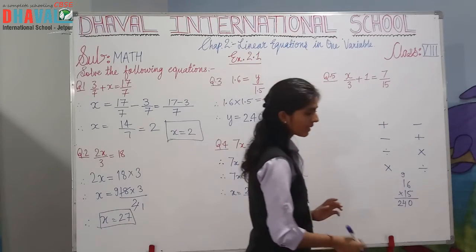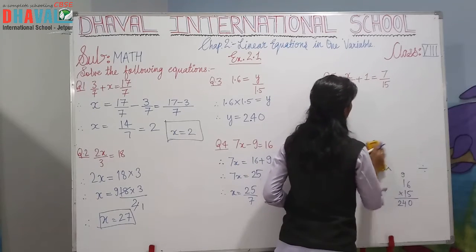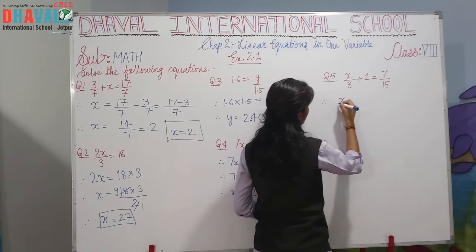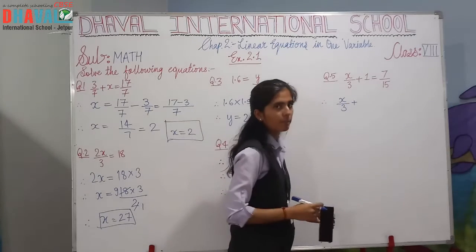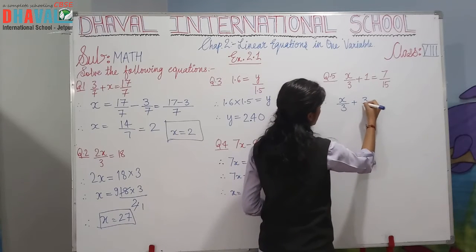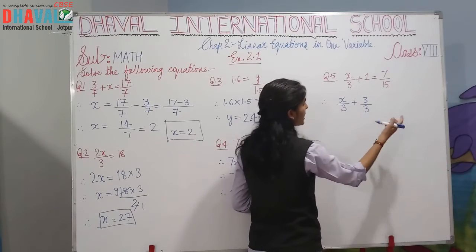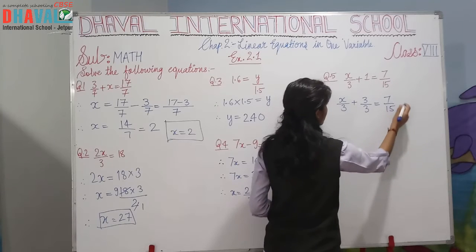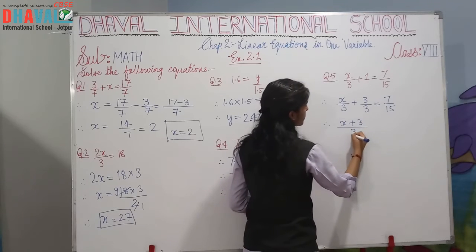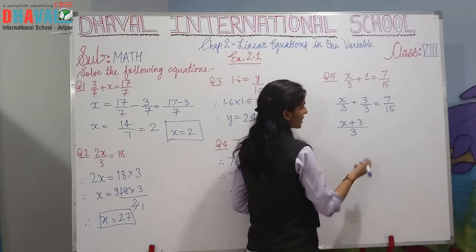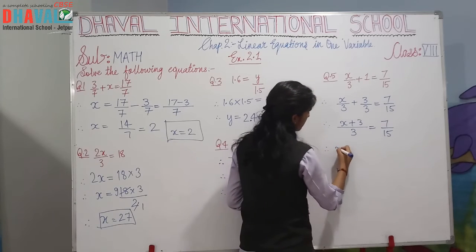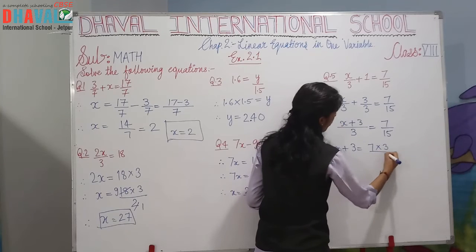The last question for this exercise is: x/3 + 1 = 7/15. To solve, we first move the 1 to the right side. Taking LCM of 3 and 15, which is 15, we multiply through. So x/3 = 7/15 − 1, and x + 3 = 7 × 3/15 = 7/5. Then x + 3 = 7/5.